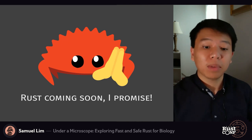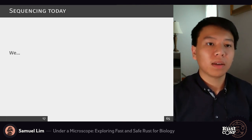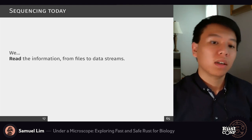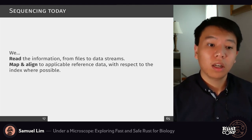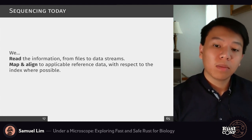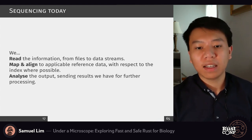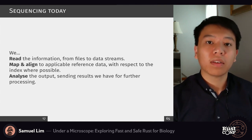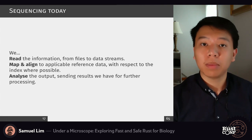The Rust applications are coming soon. From this basic understanding of the mechanisms of RNA and RNA-seq, there's a simple methodology: we read information from files and experimental samples and turn them into data streams we can manipulate. We map and align these data streams to reference data, position and compare them, and categorize them. Finally, we analyze the output to quantify gene expressions and send results for further processing in other pipelines or programs.